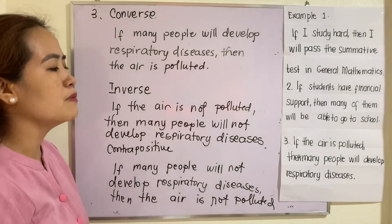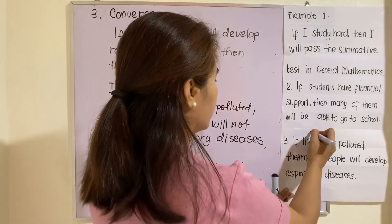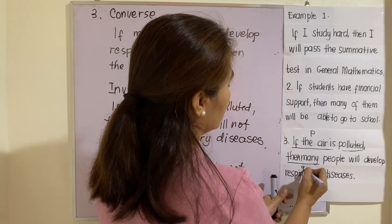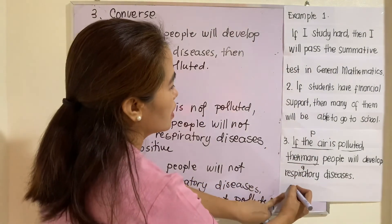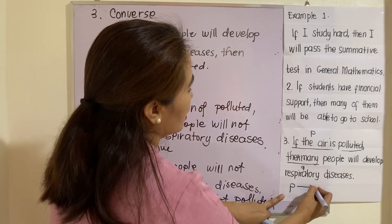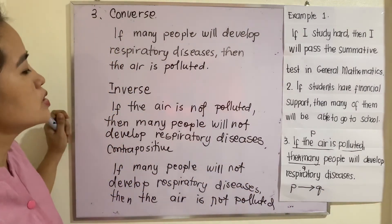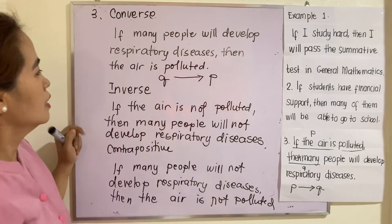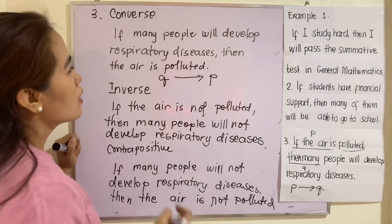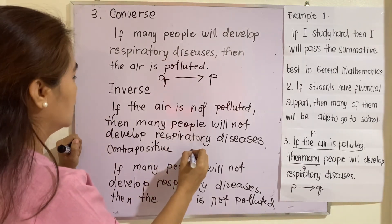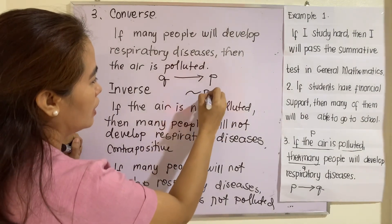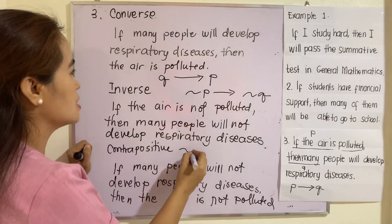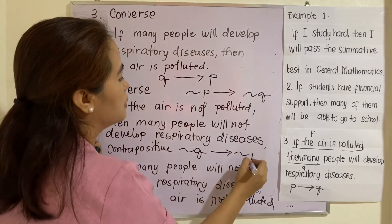If we symbolize these, we let the if part be P and the then part be Q. So the original conditional proposition is: If P, then Q. For the converse, that will be: If Q, then P. For the inverse, that will be: not P implies not Q. And for the contrapositive, that will be: not Q implies not P. Thank you.